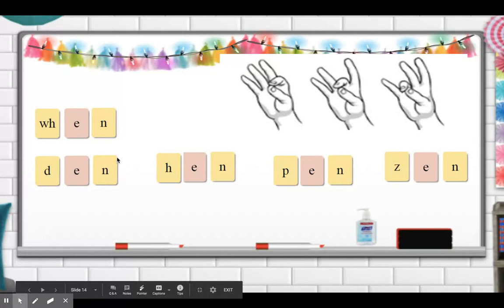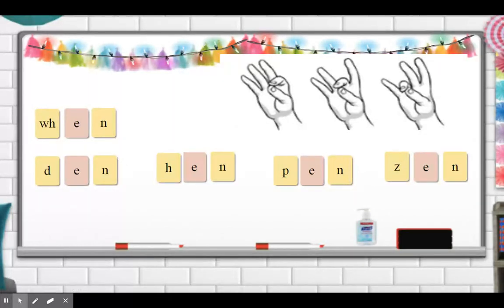Now let's look at this word. Ready? Hands up: D, E, N — den. One more time: D, E, N — den. Now let's look at this word: H, E, N — hen. One more time: H, E, N — hen.